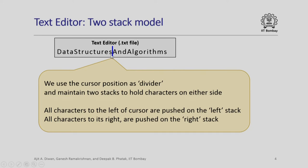Suppose we use the cursor position as a divider — I have characters to the left of it and characters to the right of it. I decide to maintain two stacks to hold characters on either side: all characters to the left of the cursor are pushed into the left stack, and all characters to the right into the right stack. To move the cursor left or right, simply pop elements from one stack and push onto the other. To delete, pop the left or right stack. For insertion, push to the left stack. To visualize the entire text, move all characters from the left stack to the right stack.